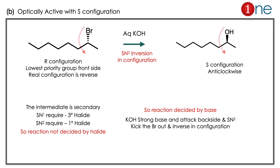Here, the starting material is a secondary halide. You are using aqueous silver oxide — a very strong base. Let us analyze the possibilities: the intermediate is secondary, but SN1 requires tertiary and SN2 requires primary — however, the reaction is not decided by the halide alone; we have to look at the reaction conditions. A strong base always goes with the SN2 mechanism: it performs a backside attack, kicks the bromine out, and forms an inversion of configuration. Looking at the product, which has inversion of configuration and is optically active, the configuration will be S. The key concept: for secondary halides, the reactivity is mostly dictated by the reaction conditions — here it is dictated by the strong base.